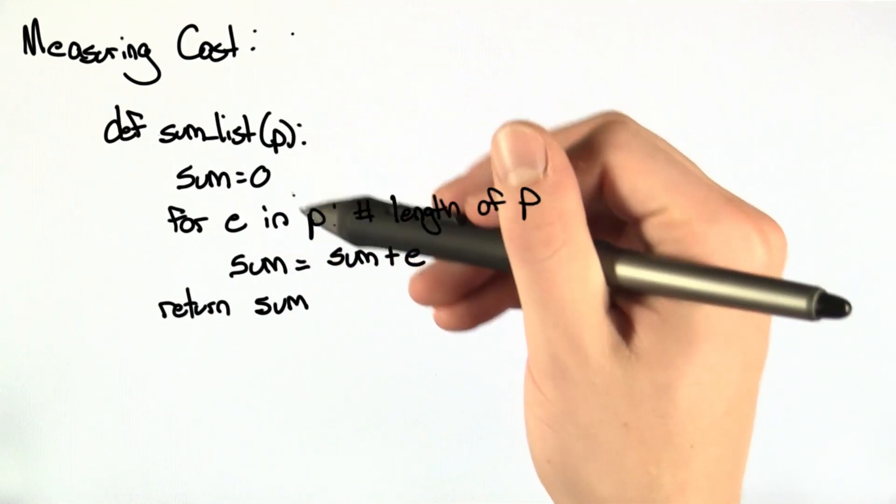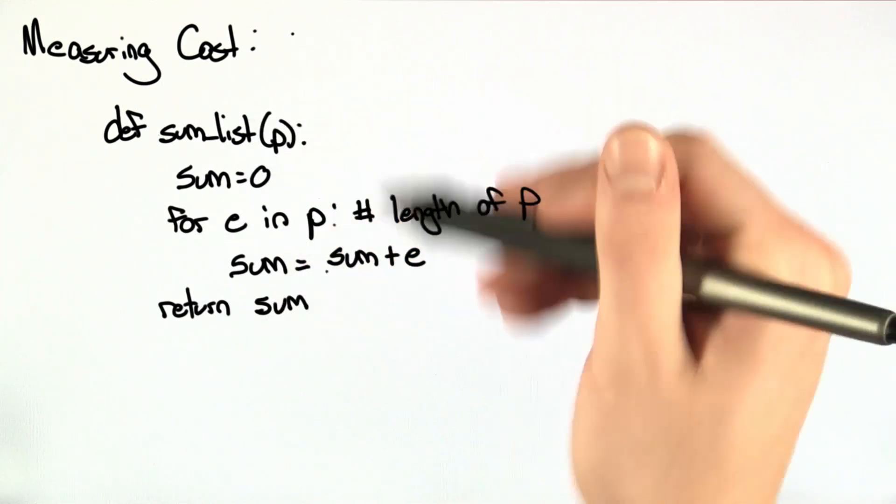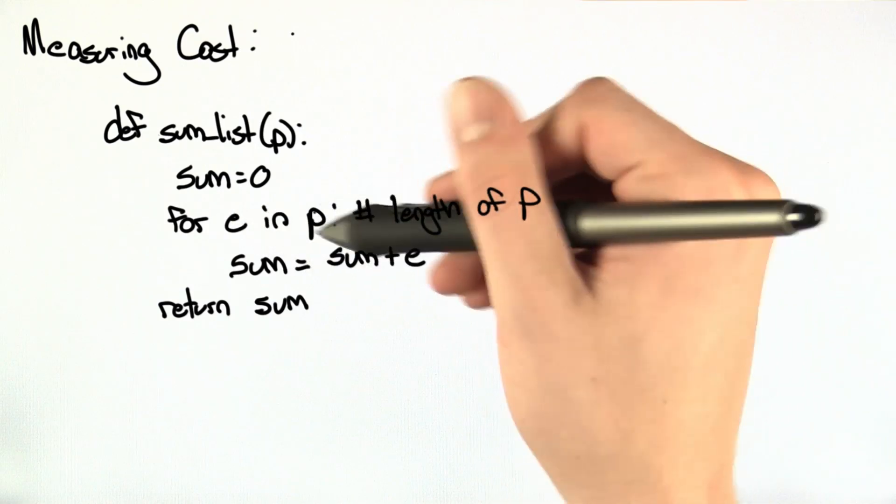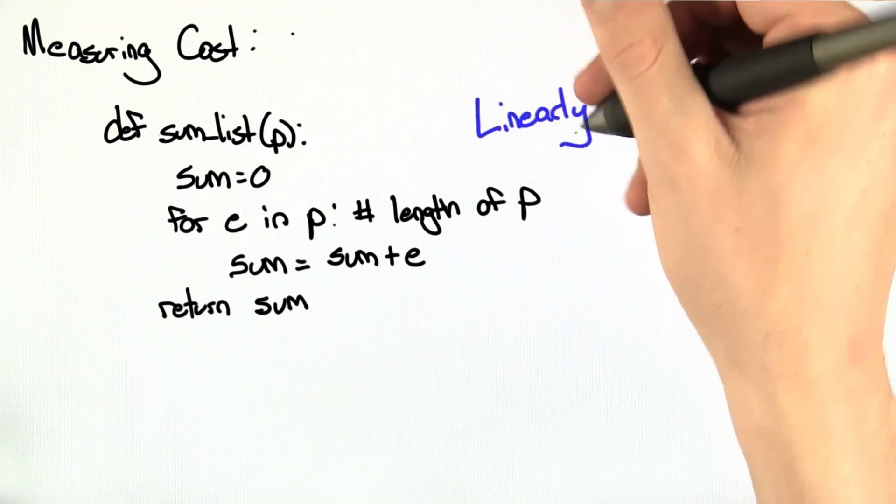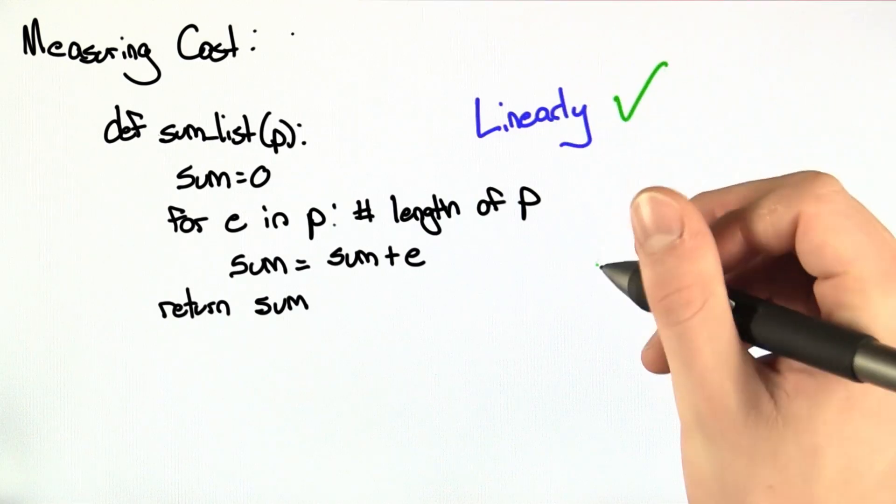And accordingly, if you double the number of items in p, you also double the runtime because you have to go through twice as many items in this for loop. And so the runtime of sum list scales linearly with the number of items in the list p.